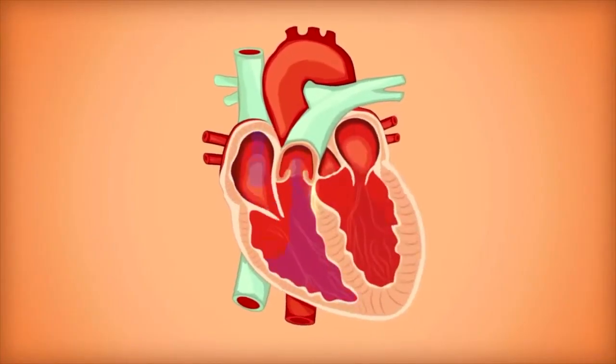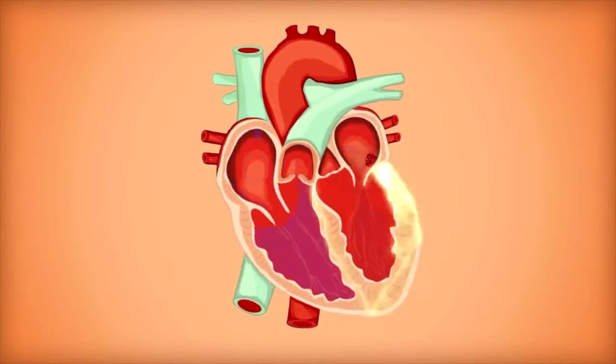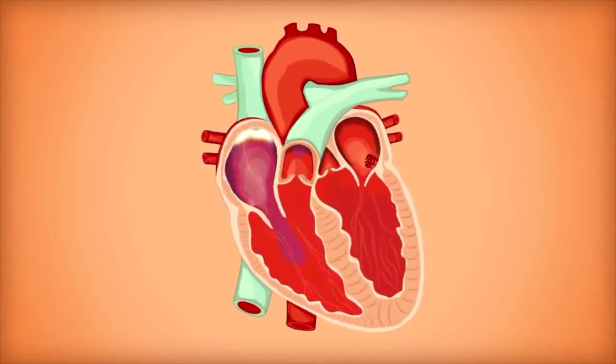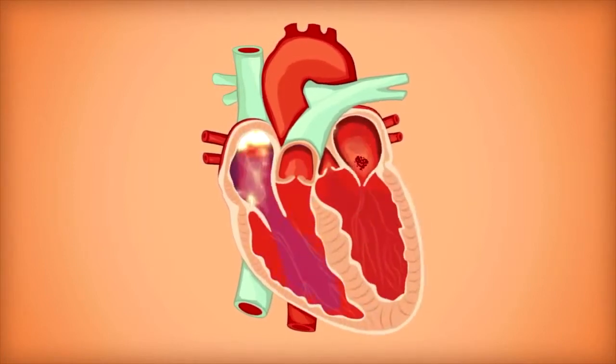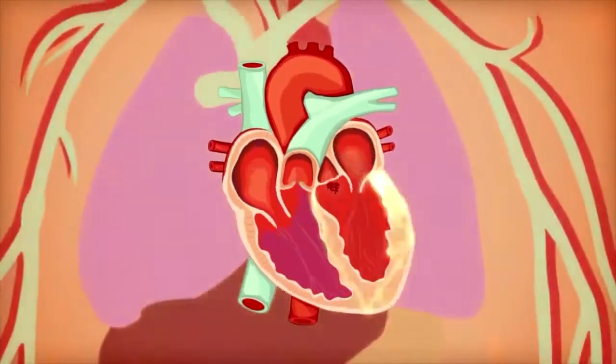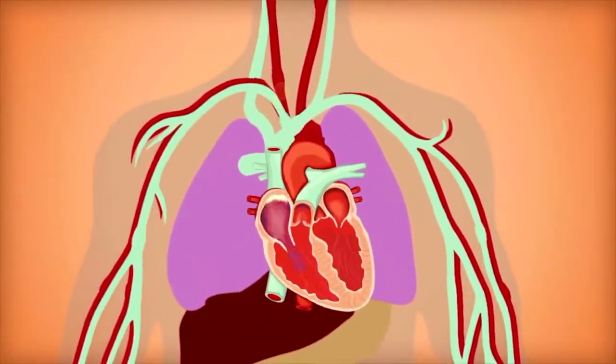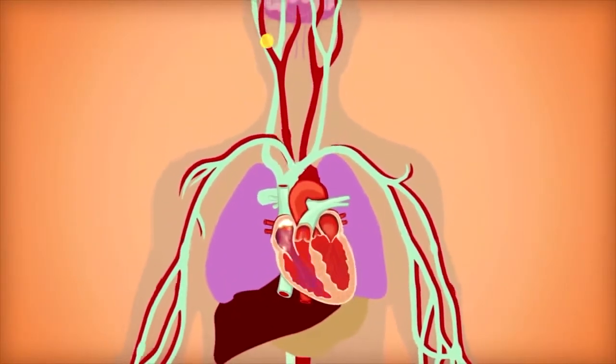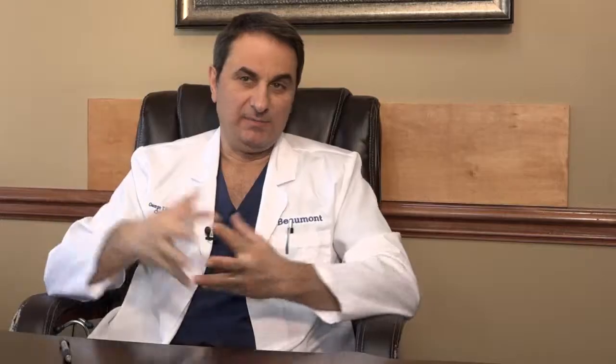The main risk of atrial fibrillation is inducing strokes. When the top chamber is not beating regularly and fibrillating, the blood doesn't move effectively, becomes stagnant, and may clot. A piece of that clot may break loose and go to the brain or any part of the body. This is a very common cause of strokes — about 25% of strokes are caused by atrial fibrillation.